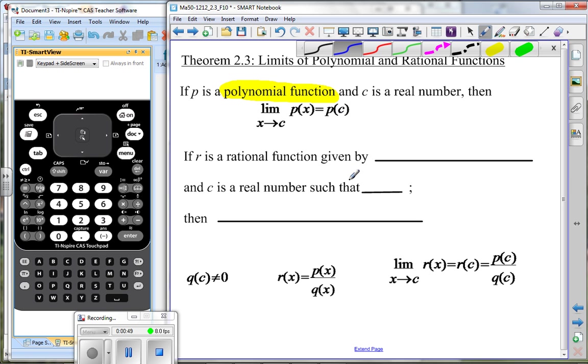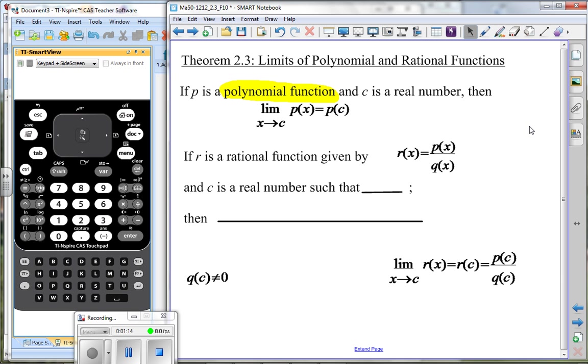If r is a rational function given by, which of those items down there would fit in that space? Yeah, it should be r of x equals p of x divided by q of x. Because that is, in fact, a rational function.